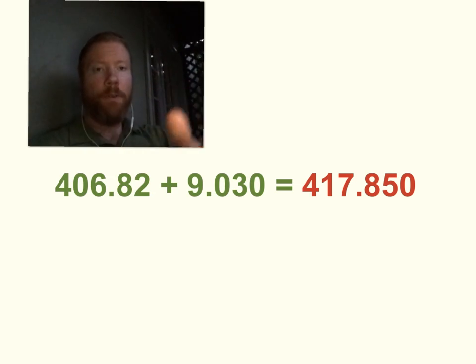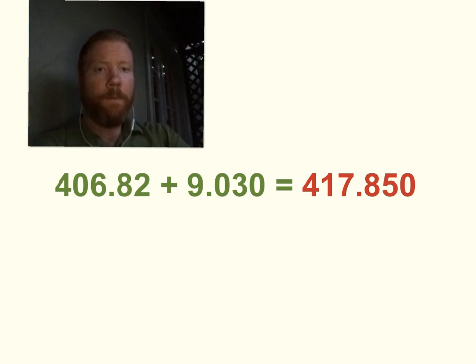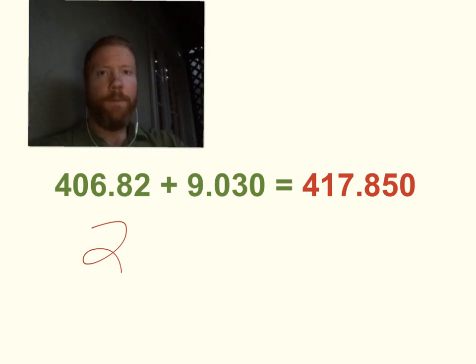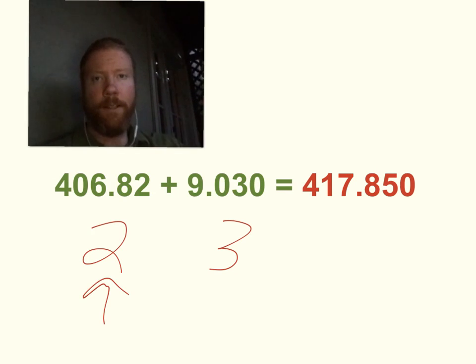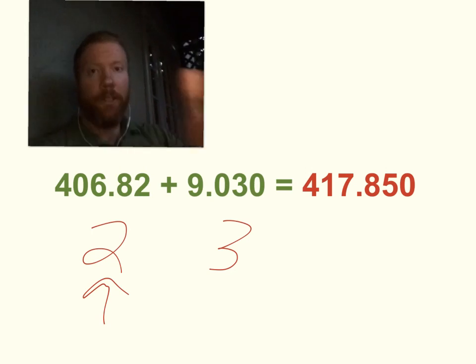So if we go through and look at our inputs, the first one over here, 406.82, has two numbers after the decimal. The second one has three numbers after the decimal. So we only get to keep the fewest, right? So two is fewer than three. Two is less than three. So how many digits does our answer get to have after the decimal? It's two. It's the fewest, right?